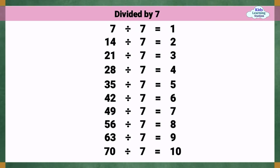Divided by 7. 7 divided by 7 equals 1. 14 divided by 7 equals 2. 21 divided by 7 equals 3. 28 divided by 7 equals 4. 35 divided by 7 equals 5. 42 divided by 7 equals 6.